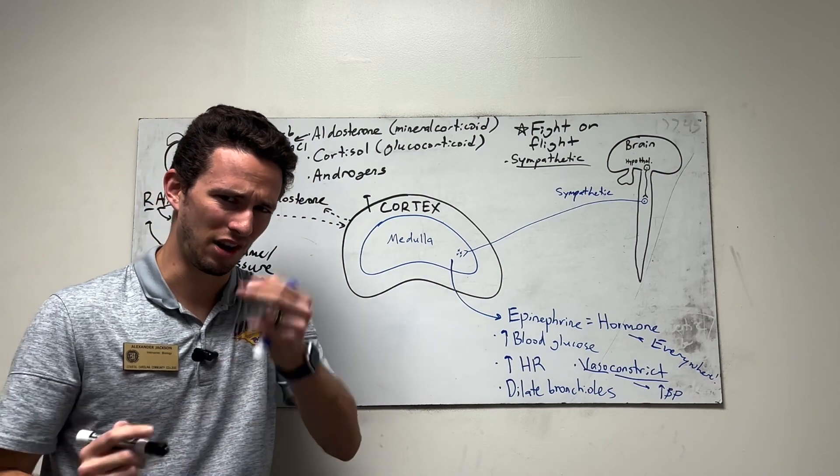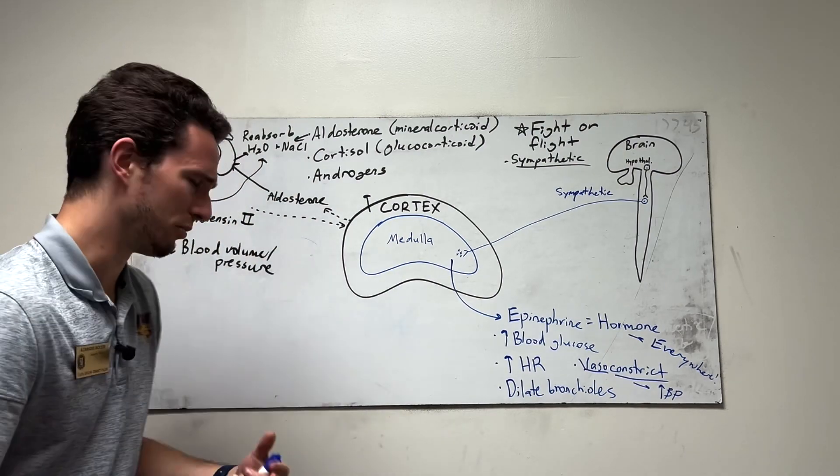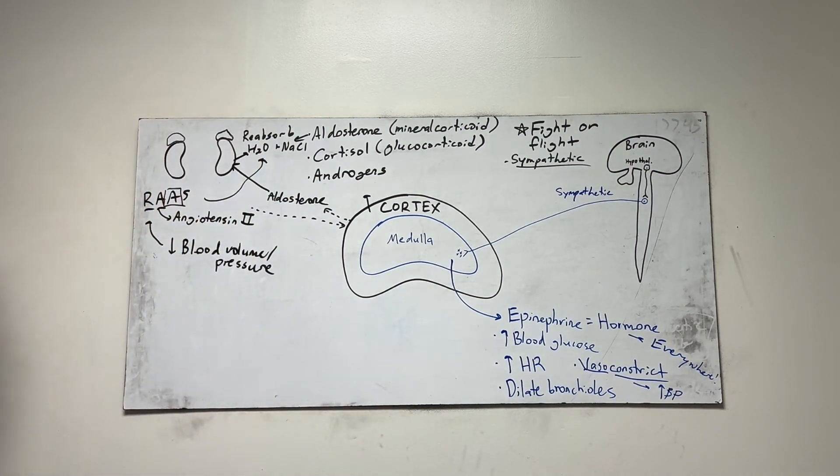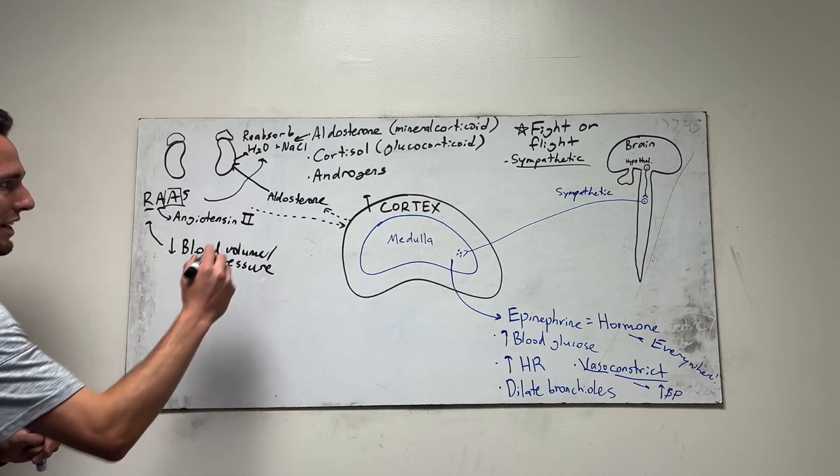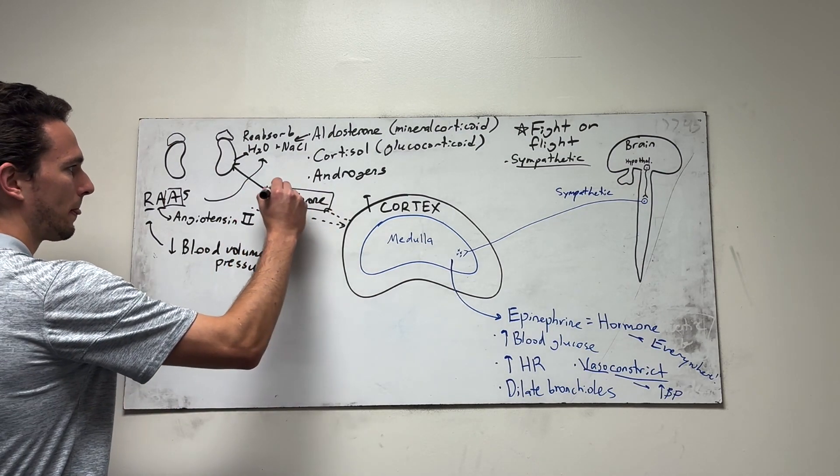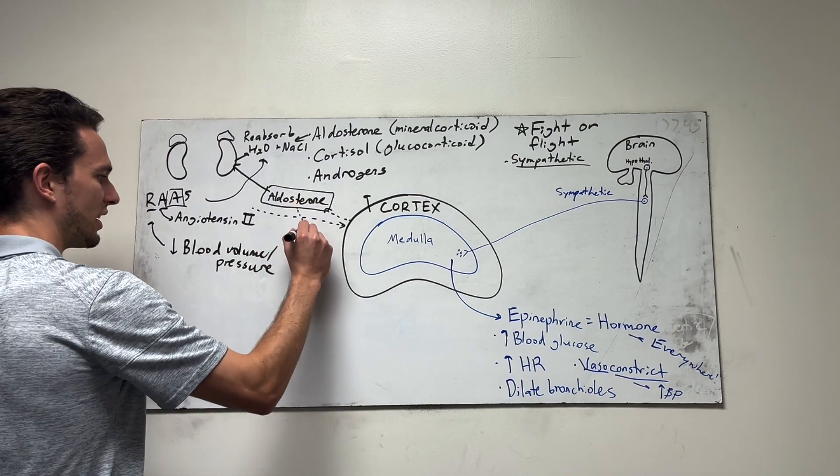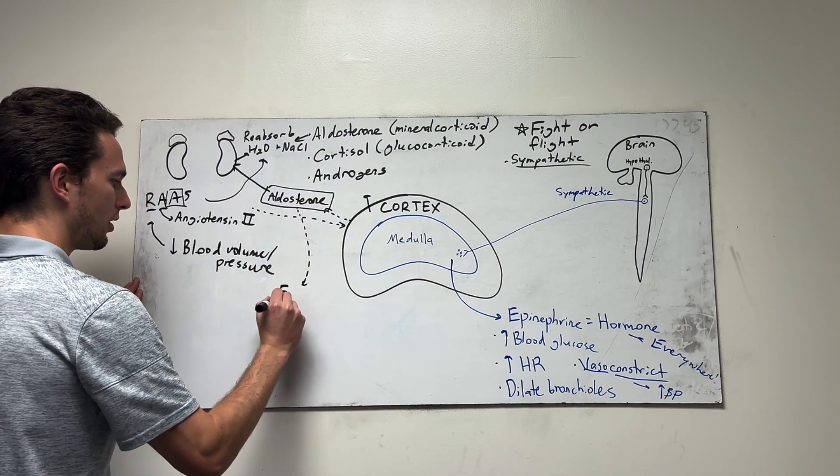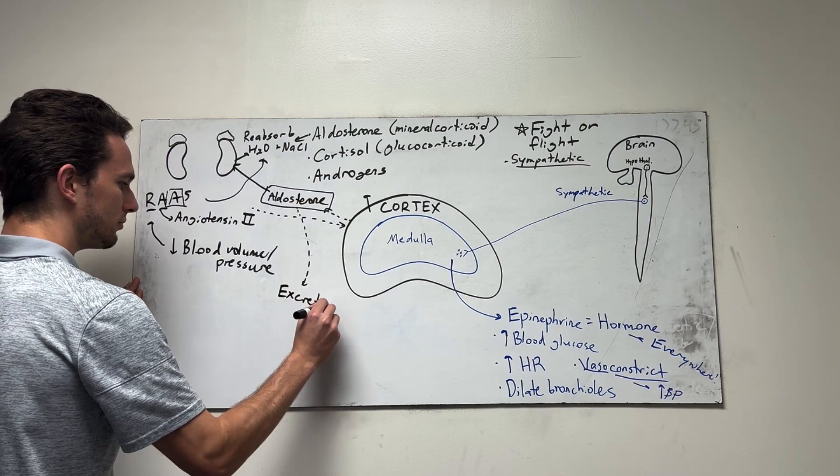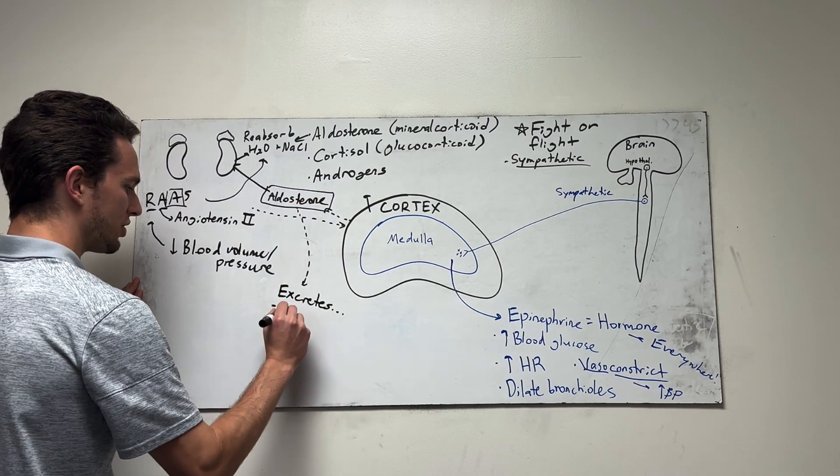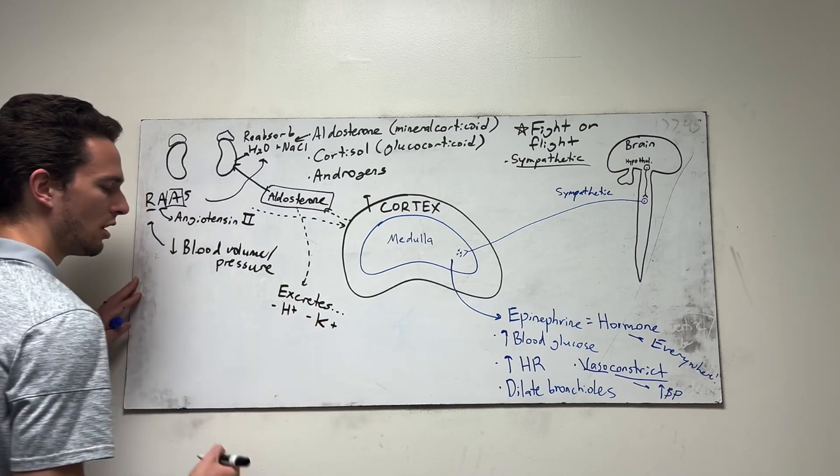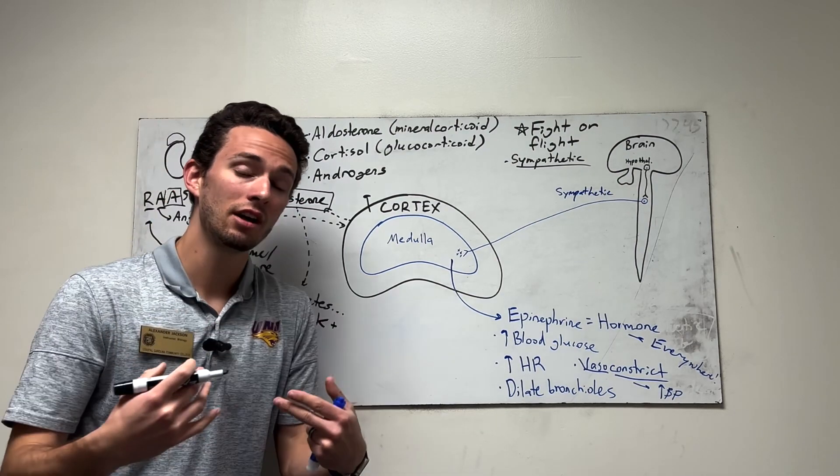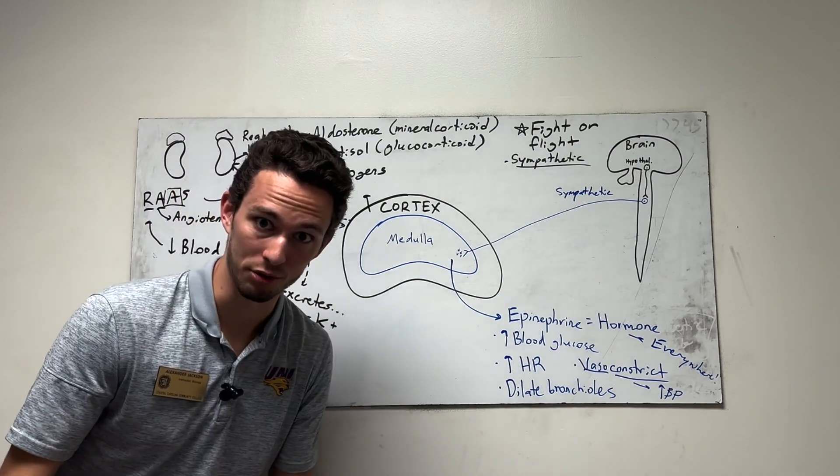Now this happens at the kidneys itself. So aldosterone will go to the kidneys and tell the kidneys to reabsorb that water and salt. It acts specifically on the distal convoluted tubule, helps increase some sodium pumps as well as some symports. But one issue with aldosterone is that it also helps excrete two things. Number one, hydrogen ions. Number two, potassium ions.